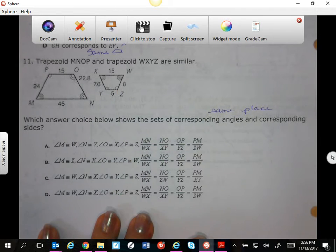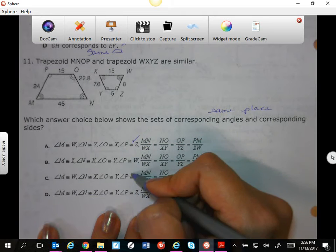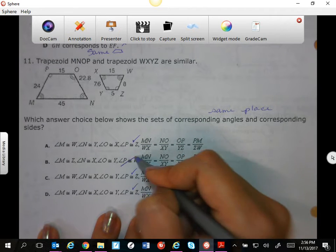Angle P is the same as angle Z, which this one shows, and this one shows, and this one shows. We can't eliminate based on that.